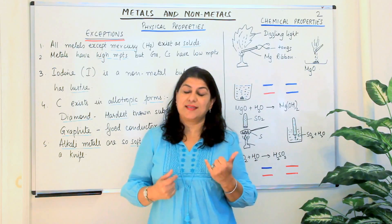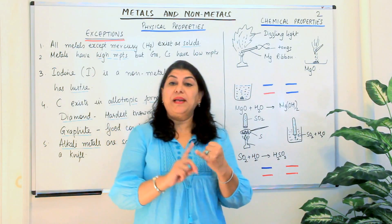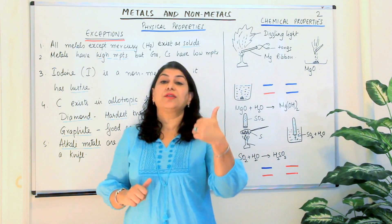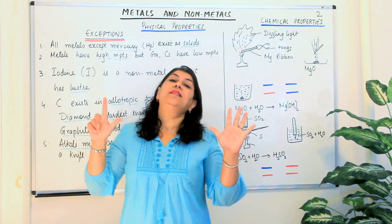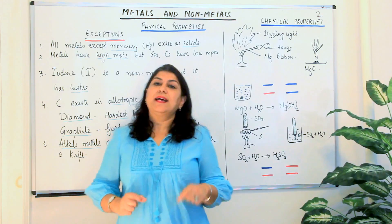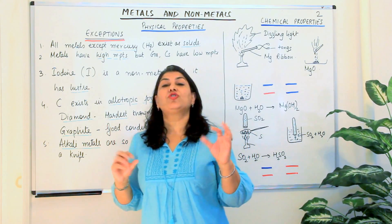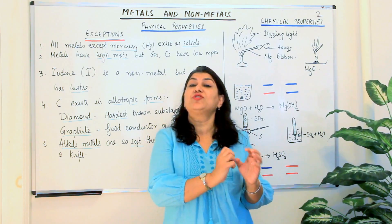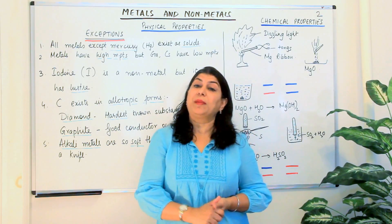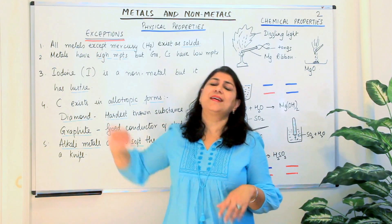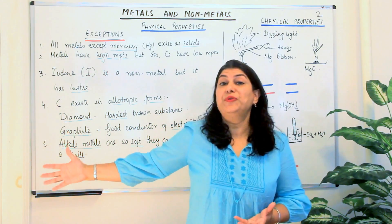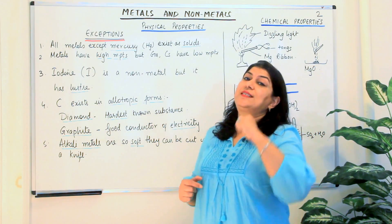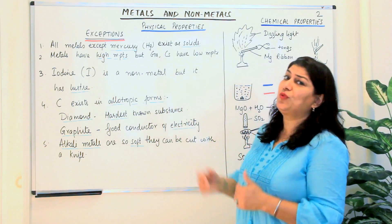For example, the physical properties we discussed: metals have lustre, they are hard, they are malleable, they are ductile, they are good conductors of heat, good conductors of electricity, and they are sonorous — seven properties. But many elements, whether metals or nonmetals, show anomalies and do not strictly follow these physical properties. So we study these under the exceptions. Let us see them and then see what is the need of studying chemical properties — that is what we will be doing in this video.